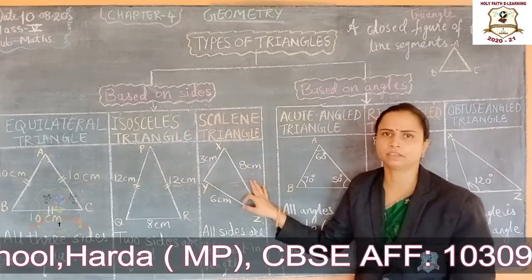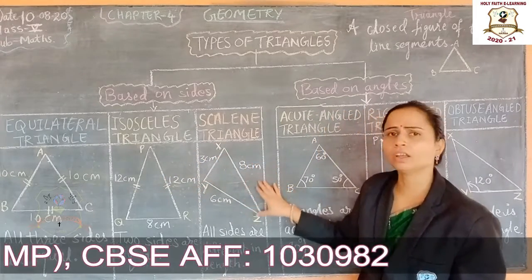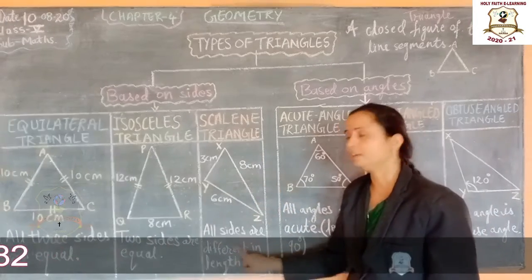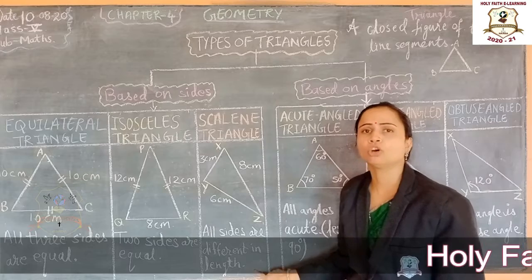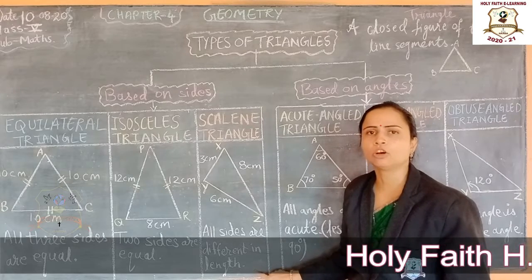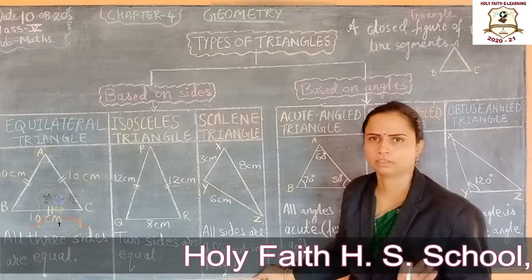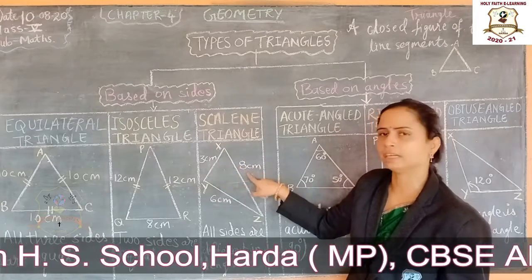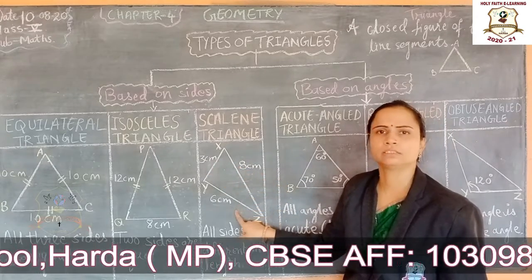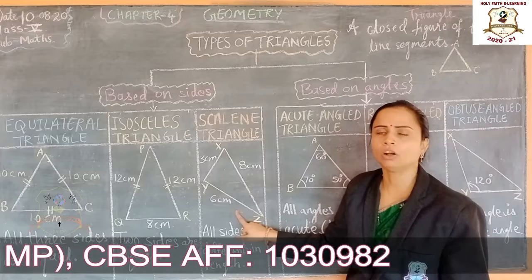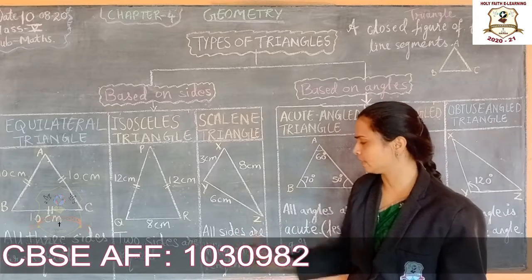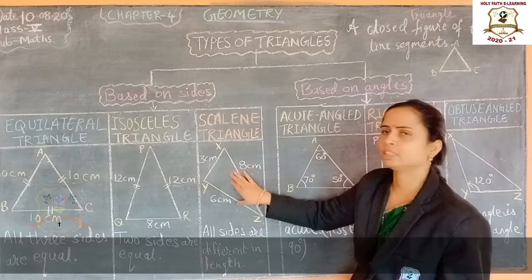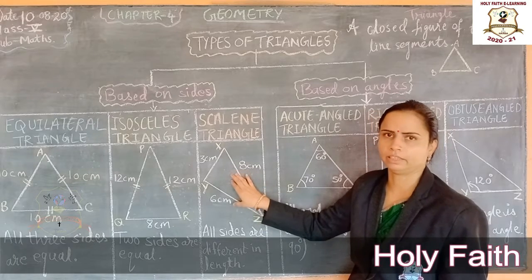Next is scalene triangle. A triangle which has all sides different in length, or we can say all sides are unequal. Here you see: this side is 3 cm, this side is 8 cm, and this side is 6 cm. All sides are different in length. So this is a scalene triangle.